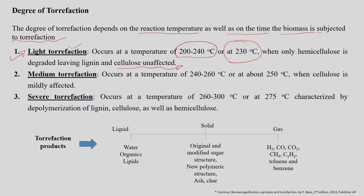That is why it is called a light degree of torrefaction. The medium degree of torrefaction occurs in the temperature range of 240 to 260°C, specifically around 250°C. In this process, cellulose is mildly affected, which is why it is called mild torrefaction or mild degree of torrefaction.